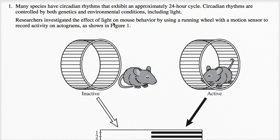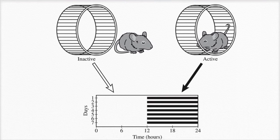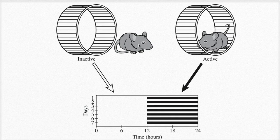Researchers investigated the effect of light on mouse behavior by using a running wheel with a motion sensor to record activity on actograms, as shown in Figure 1. Let's think about what Figure 1 is showing us. We have a picture of a mouse here that seems to be inactive, definitely not on the running wheel, even eyes closed, maybe it's sleeping.